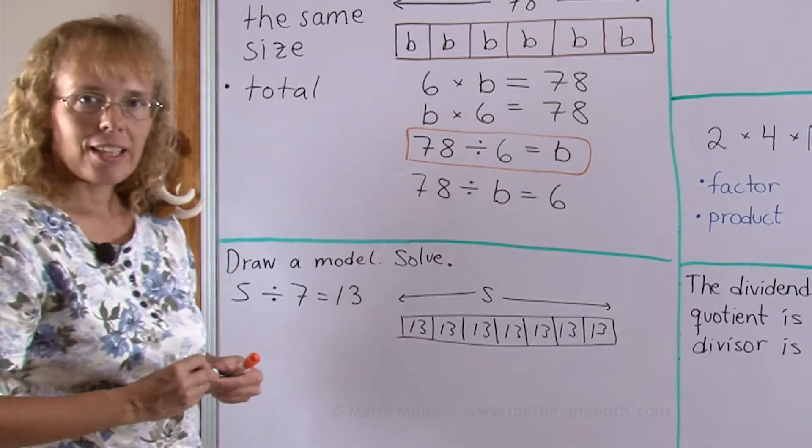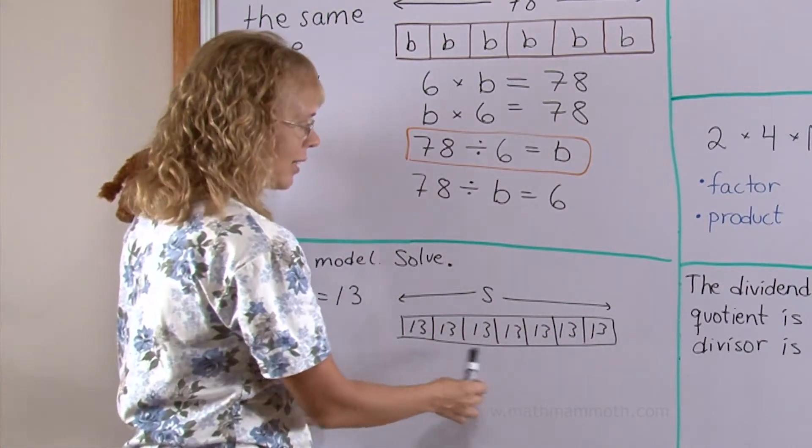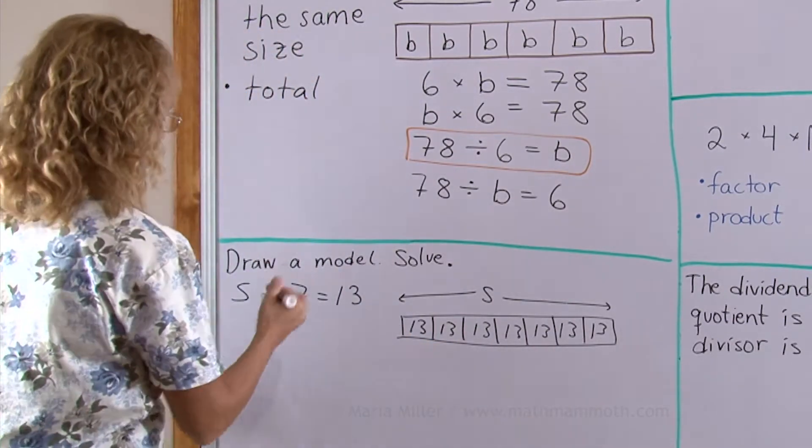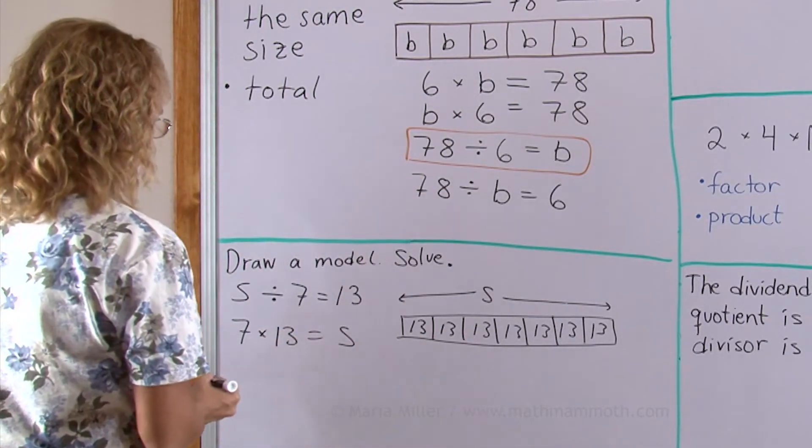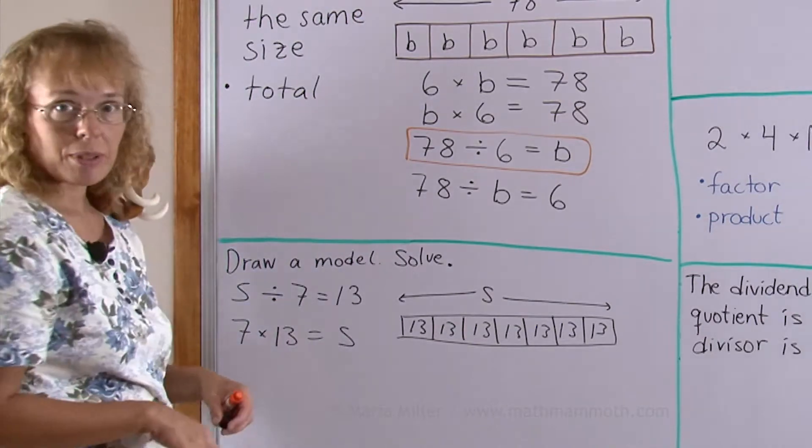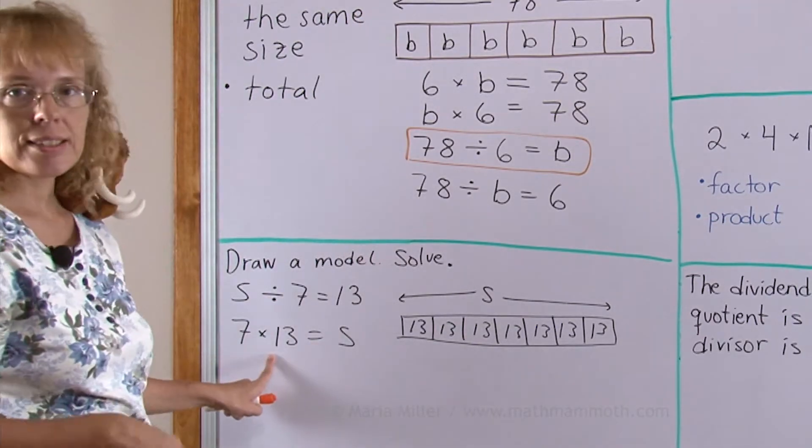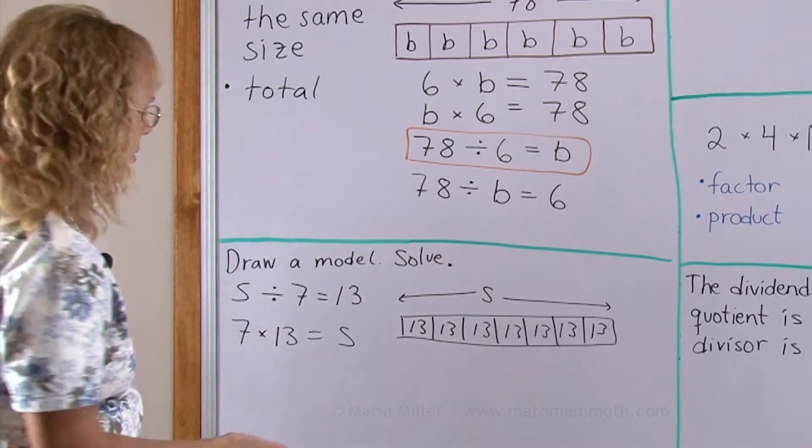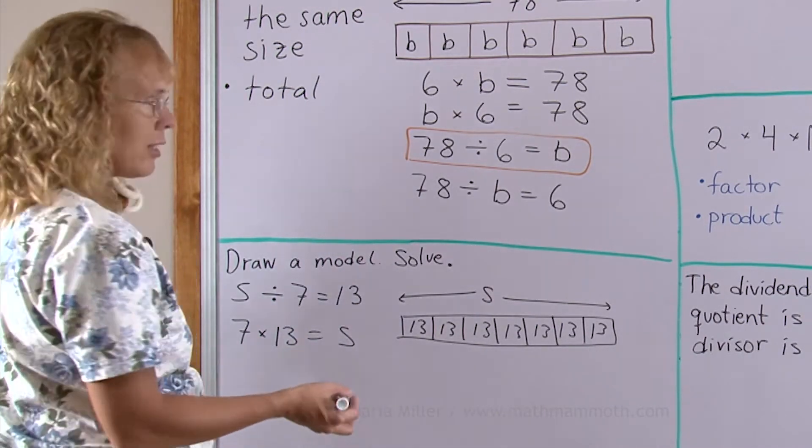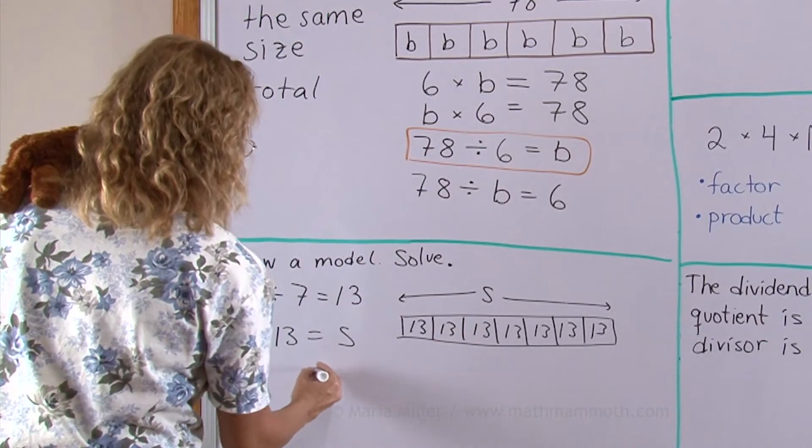And to find S, I simply multiply 7 times 13. 7 times 13 equals S. Let's do that. I'll use mental math. 7 times 10 is 70, 7 times 3 is 21. So total 70 plus 21 equals 91.